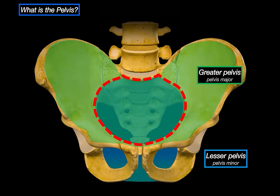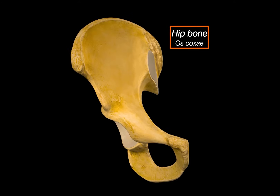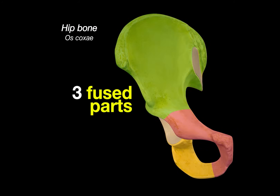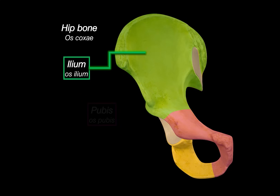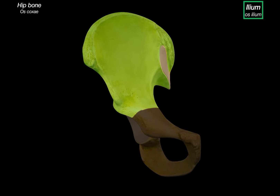So that is the pelvis — a bony ring formed by the right and left hip bones and the sacrum, divided into the greater and lesser parts by the pelvic brim, and functionally defined by the inlet and outlet. Now let's isolate the hip bone. The hip bone itself consists of three fused parts: the ilium, the pubis, and the ischium.